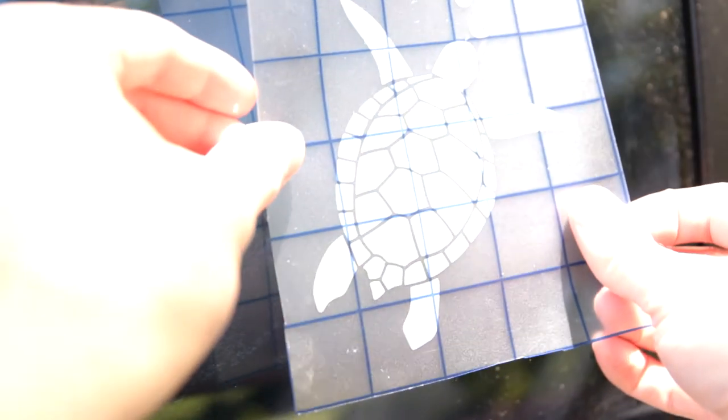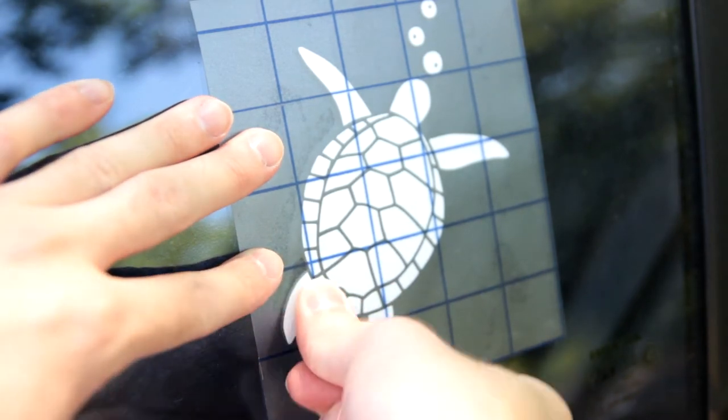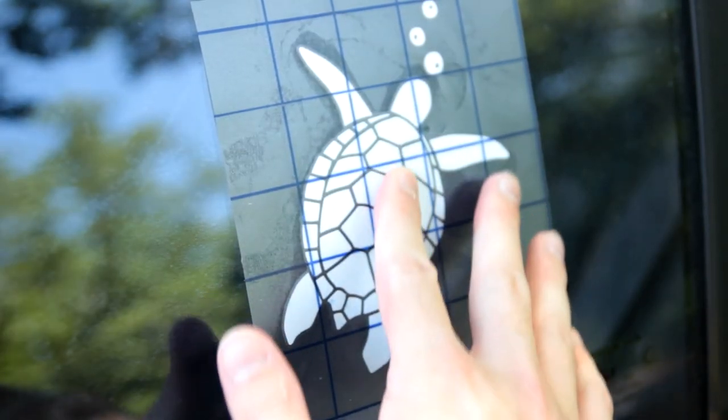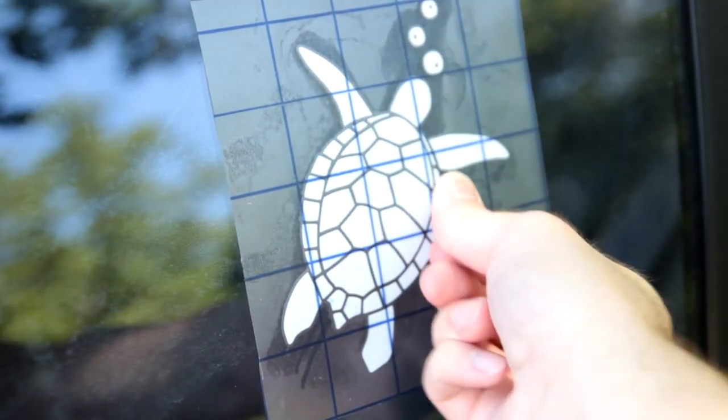We're going to take our decal, set it where we think we want it, make sure it looks good, and then we'll start applying some pressure to the entire area of the decal. I'll make sure that everything's stuck on really well and it's not going to come up when we pull away the transfer paper.